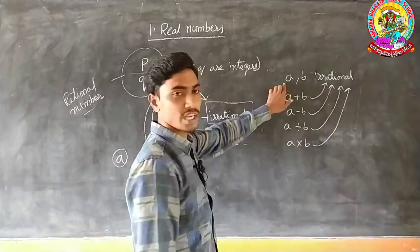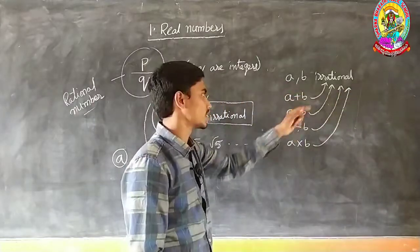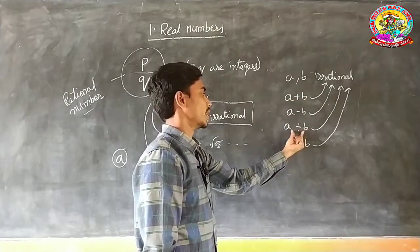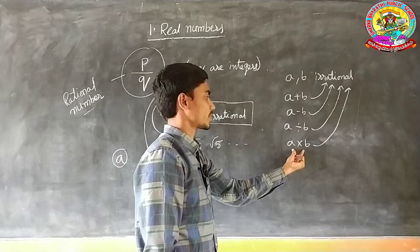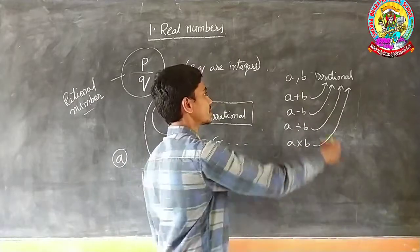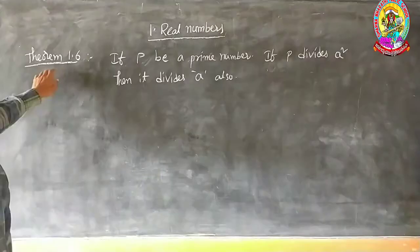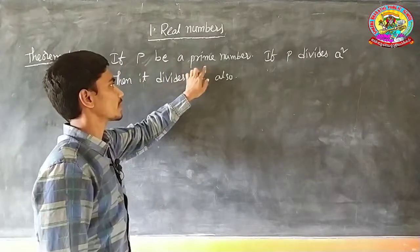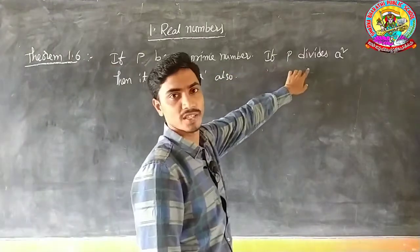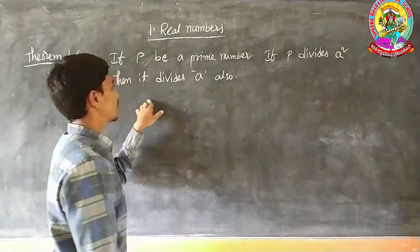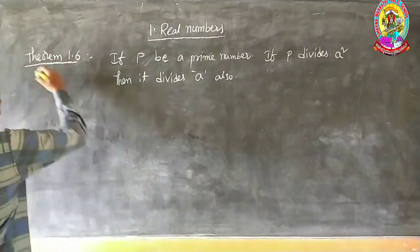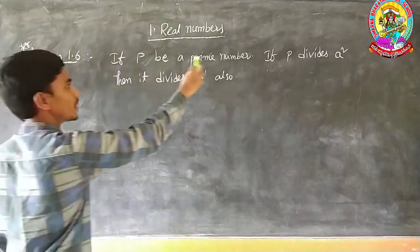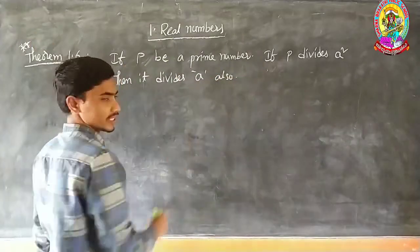Which means if A and B are irrational numbers, their sum, subtraction, division, and product or multiplication is also an irrational number. Theorem 1.6 states: if P is a prime number and P divides A squared, then it divides A also. This is a very important one.